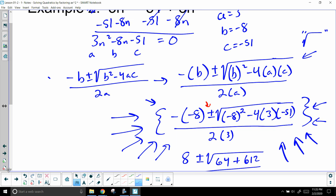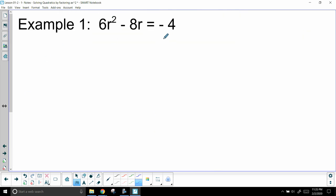Again, go ahead and pause it, try this one out. Alright, we're back. Add four to both sides. Zero, 6r squared minus 8r plus 4, because those cancel. a is 6, b is negative 8, and c is going to be 4.